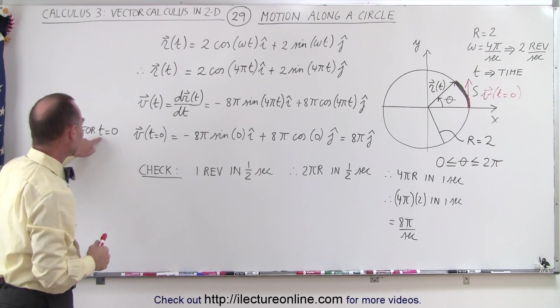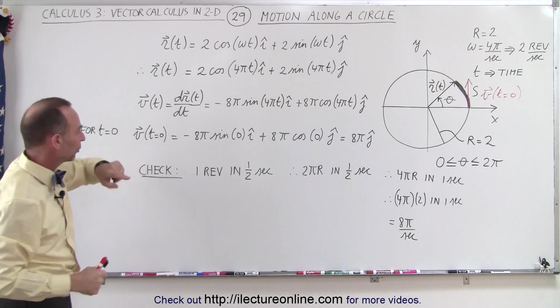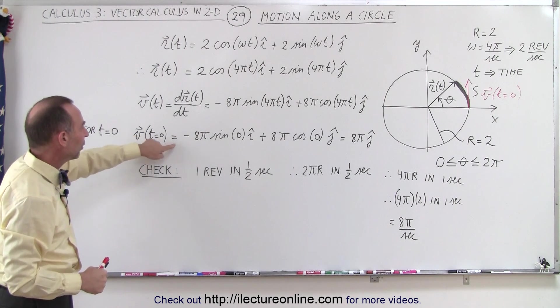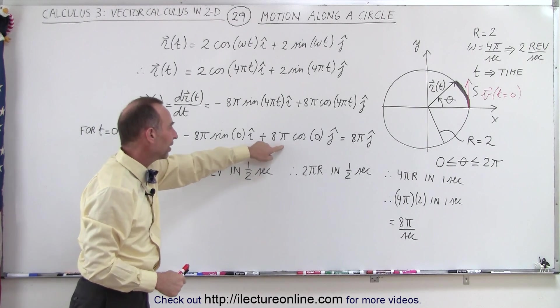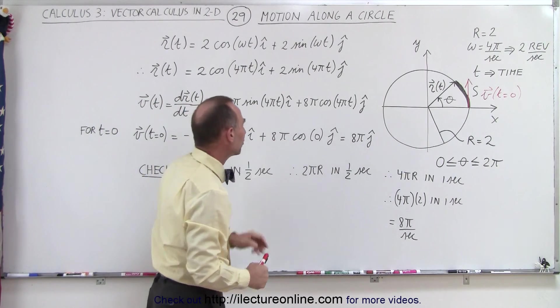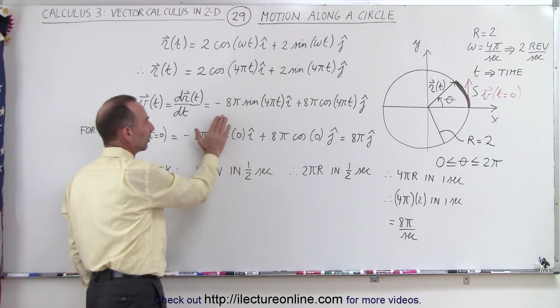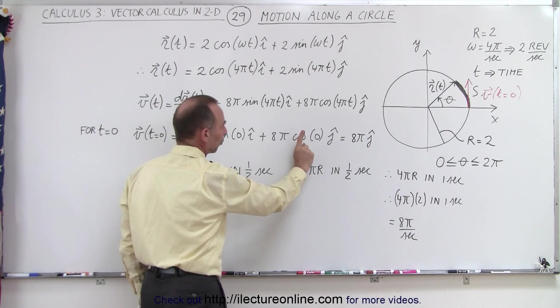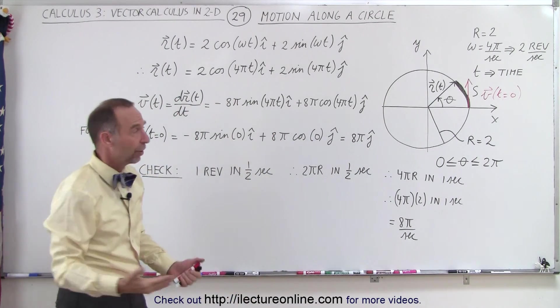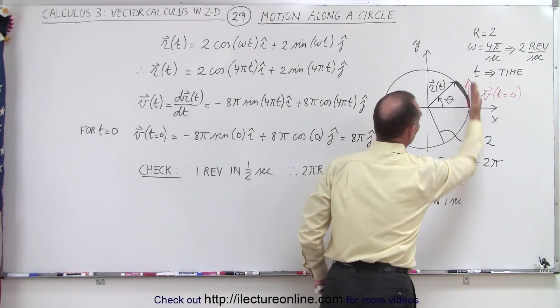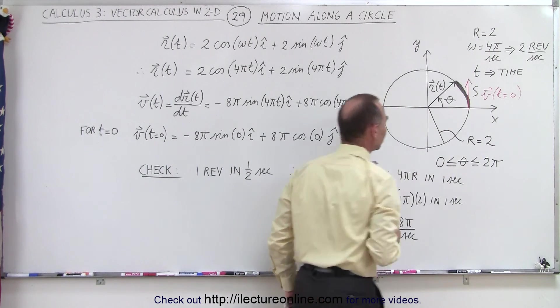So now when we let t equal 0, just like what we do on the board, the velocity when t equals 0, we get minus 8 pi times the sine of 0 in the i direction, plus 8 pi times the cosine of 0 in the j direction. Of course, the sine of 0 is 0, the cosine of 0 is 1, so we end up with 8 pi in the j direction, in the y direction. So as I've drawn here, we have a velocity of 8 pi in that direction.